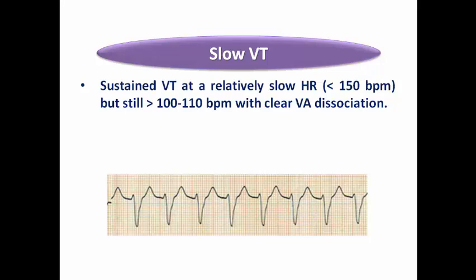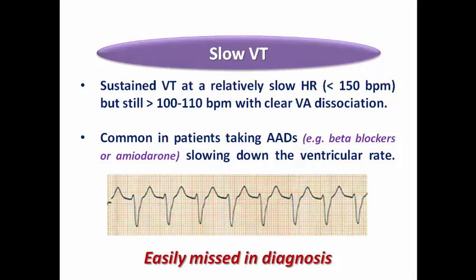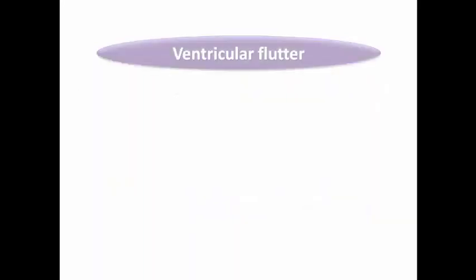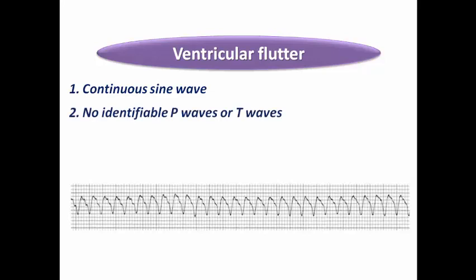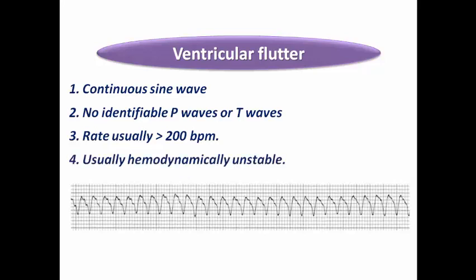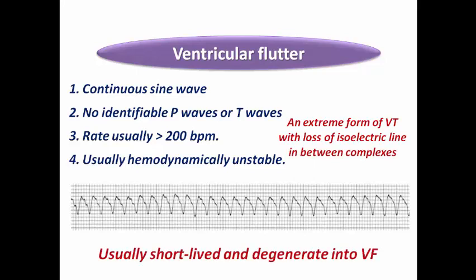Slow VT is a sustained VT at a relatively slower heart rate — less than 150 beats per minute but still more than 100 (or better, more than 110) — with clear VA dissociation. It is common in patients taking antiarrhythmic medication slowing the ventricular rate and more common in patients with structural heart disease, so it may be easily missed in diagnosis despite the clear VA dissociation.